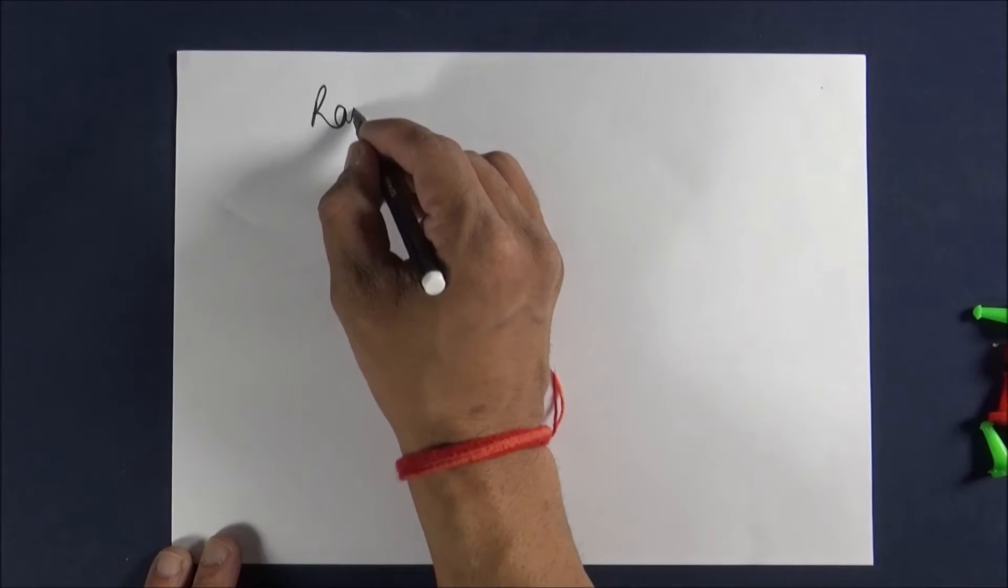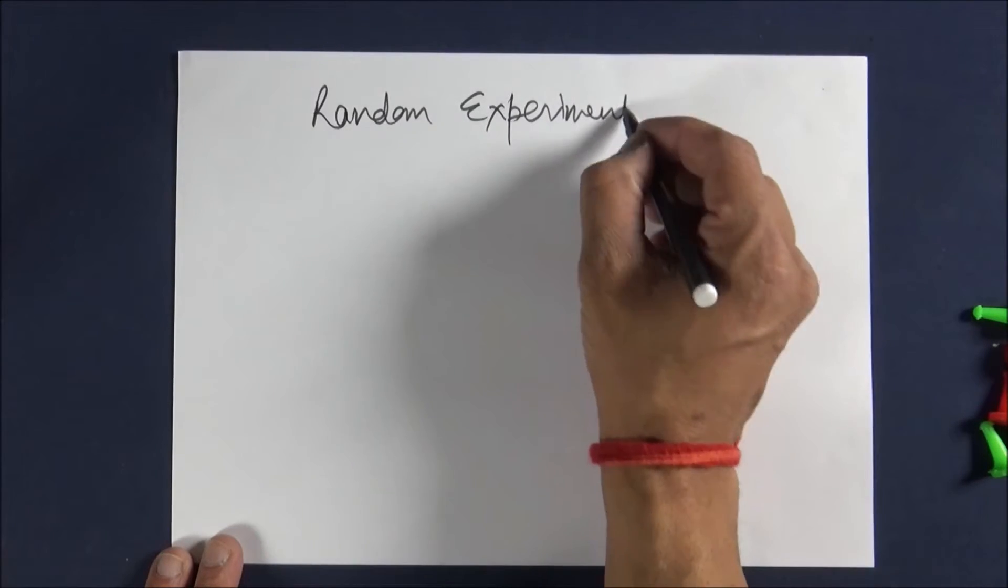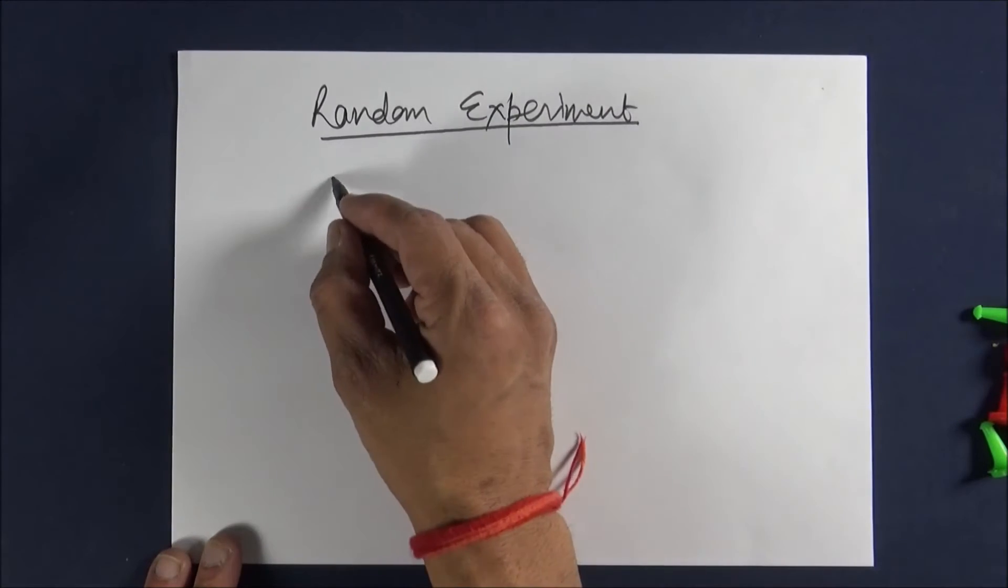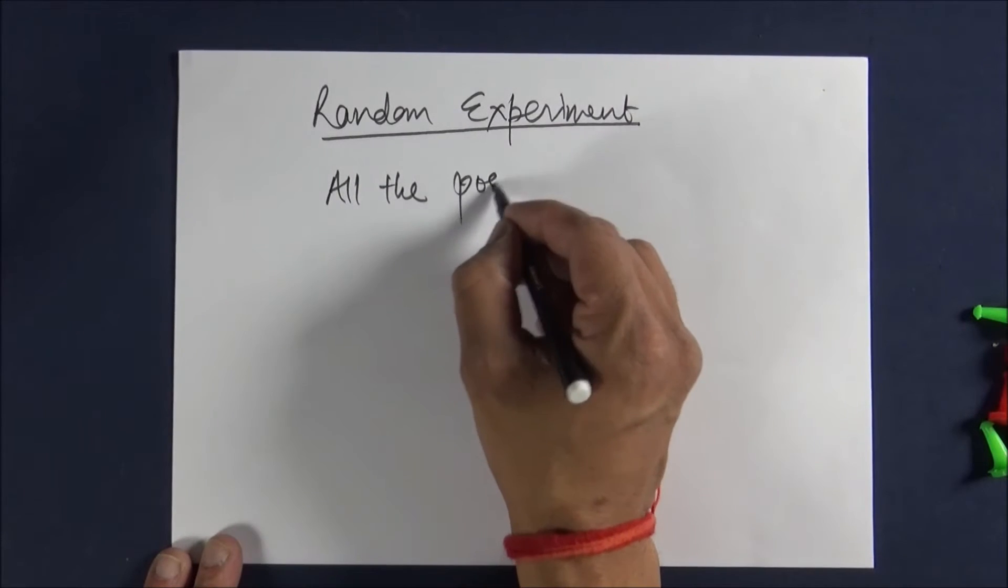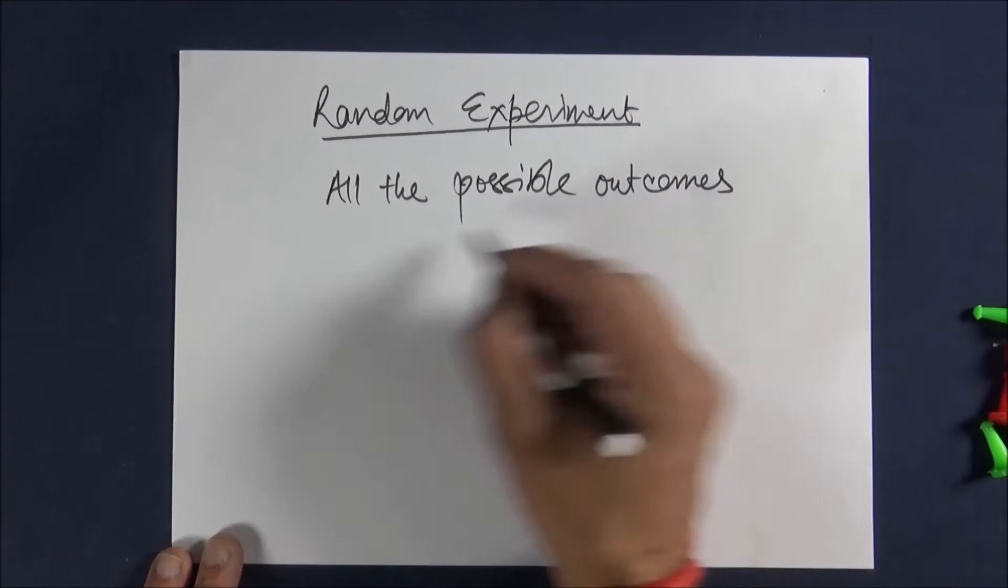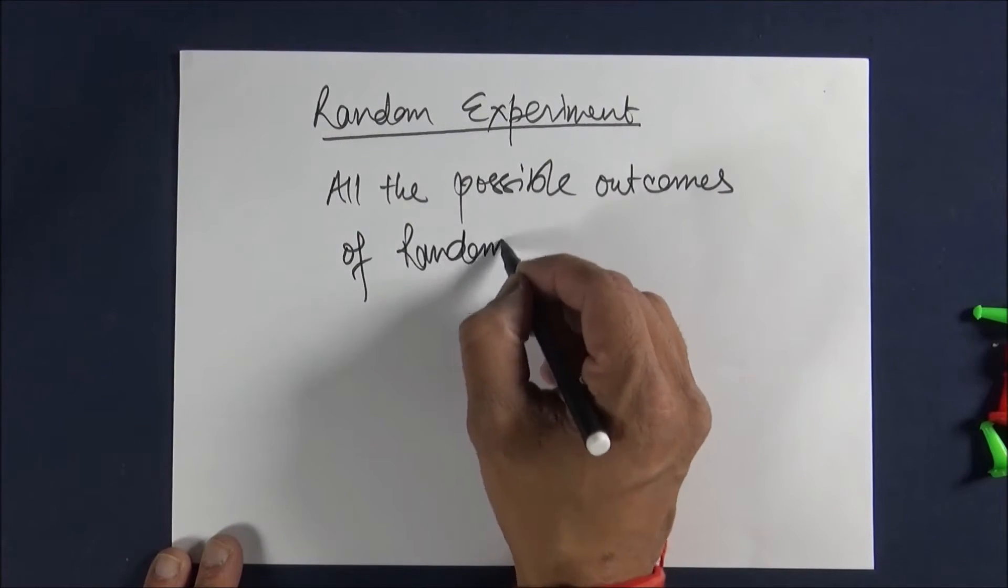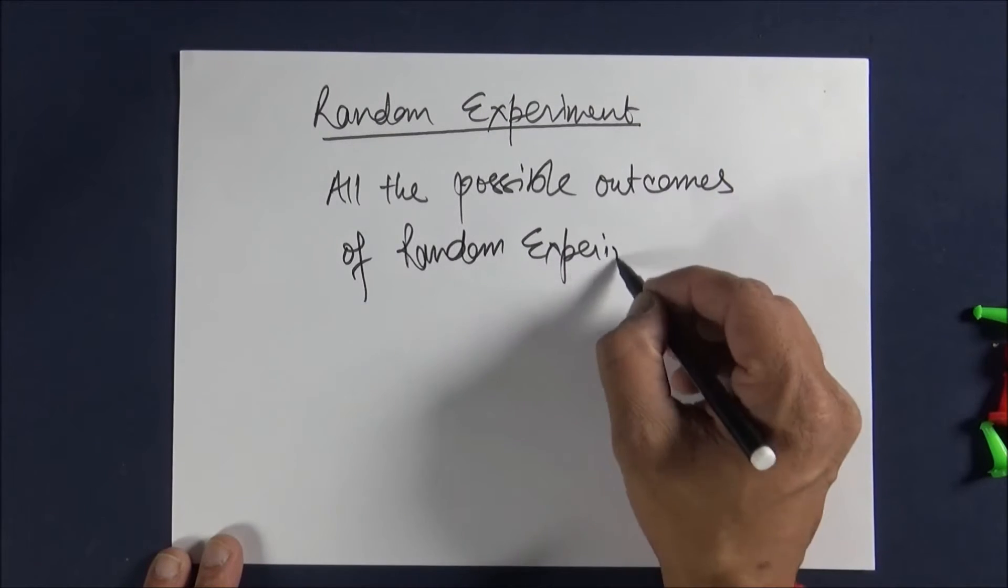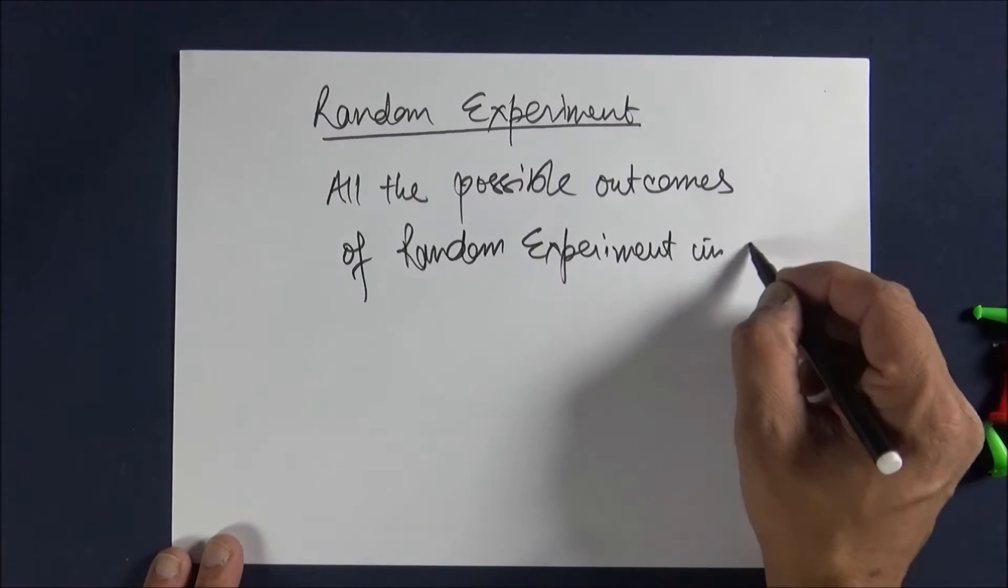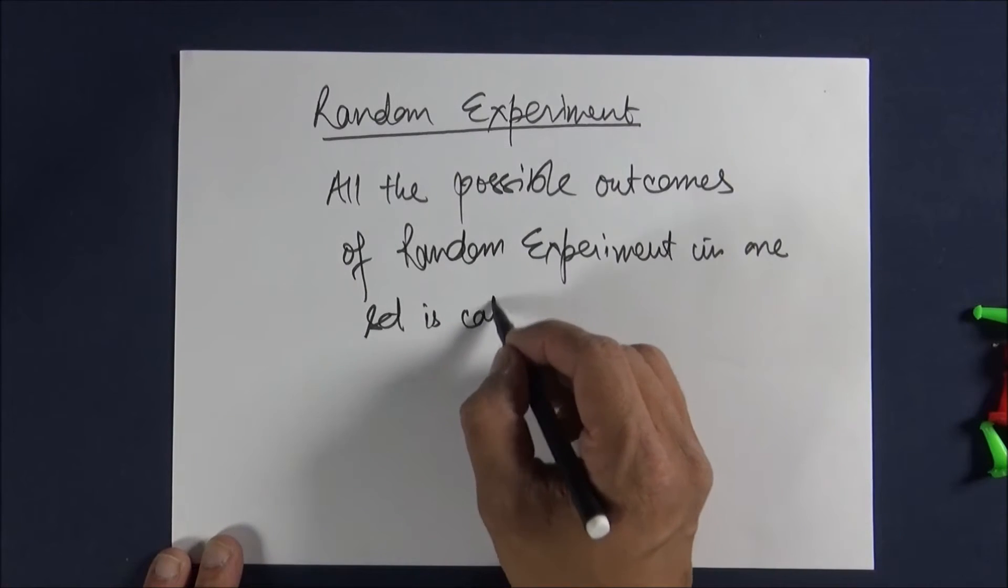Whatever we do in probability is called a random experiment, and all the possible outcomes of a random experiment in one set is called the sample space.